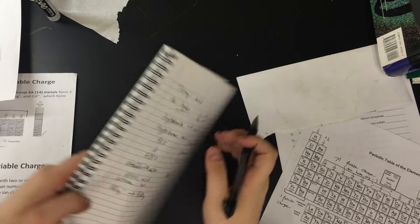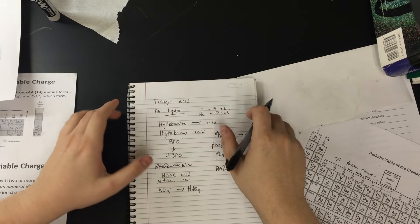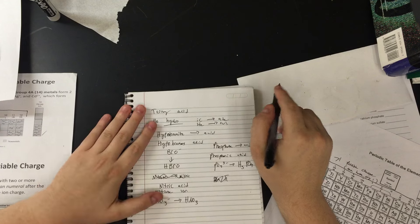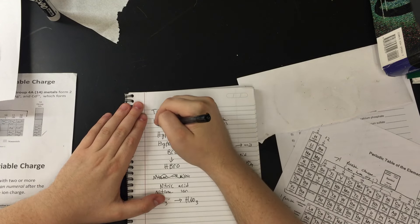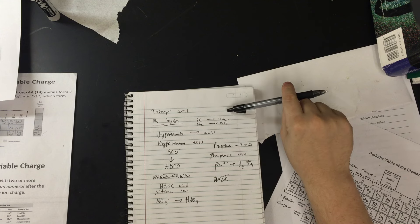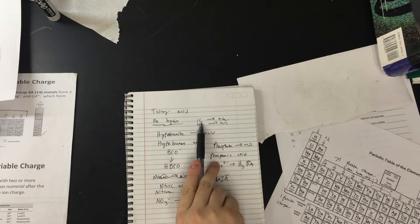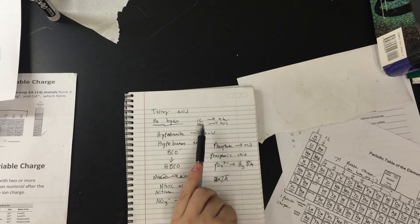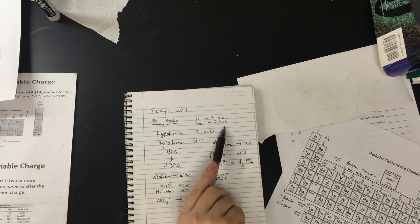If we're looking at ternary, it's going to be more than two different atoms. There's never going to be a hydro in front. You're never going to see that. Hydro is only going to be for binary. Then you're going to follow the simple rule: ic goes to ate, us goes to ite. Simple as that.